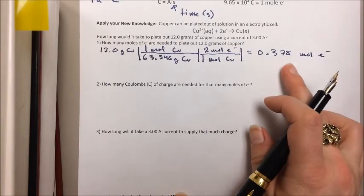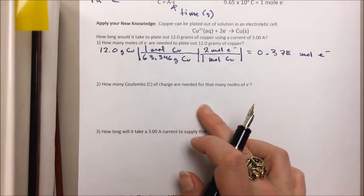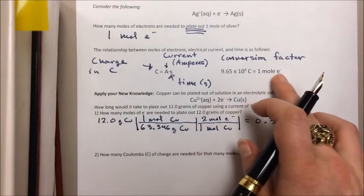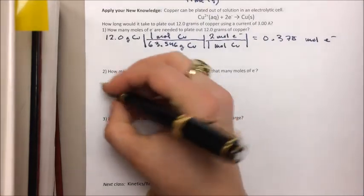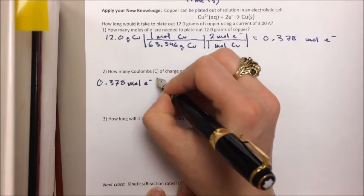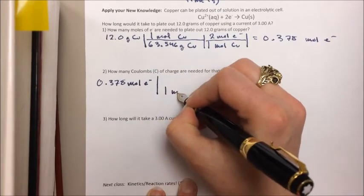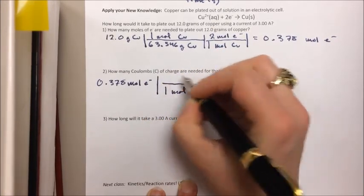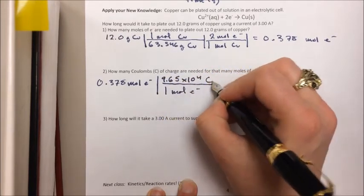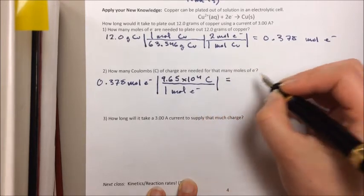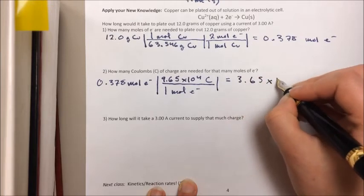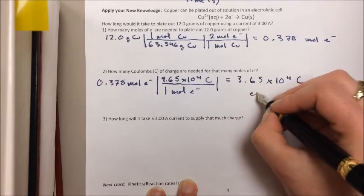So now we need to convert those moles of electrons to coulombs of charge. We do that by using our conversion factor here. So we know that we have 0.378 moles of E-. One mole of electrons becomes 9.65 times 10 to the 4th coulombs of electric charge. If we crunch that all out, we get 3.65 times 10 to the 4th coulombs of electric charge.